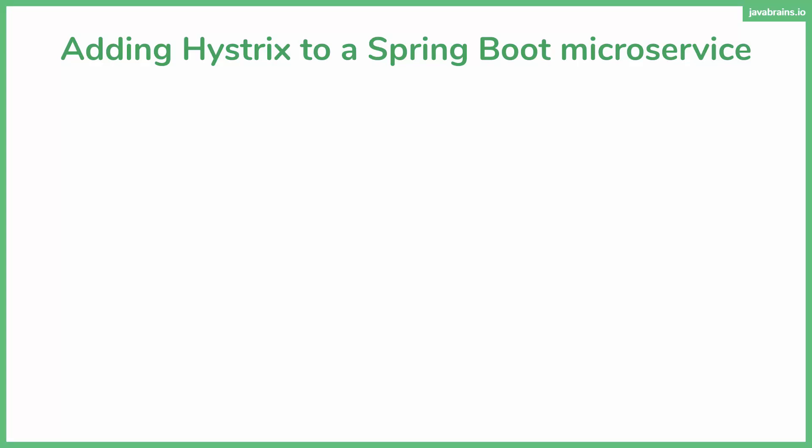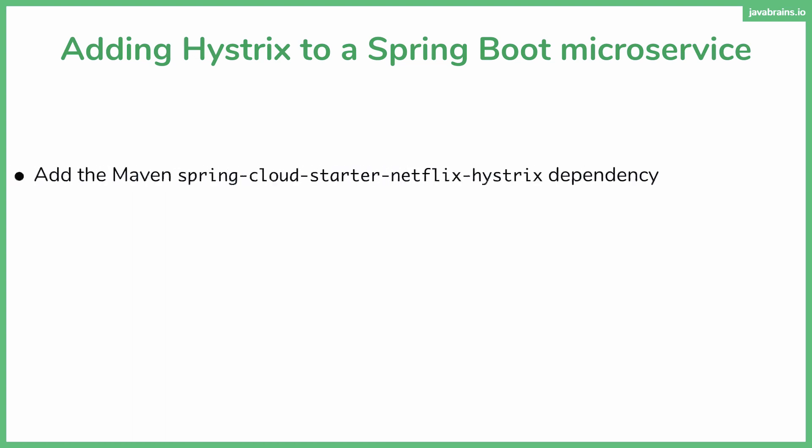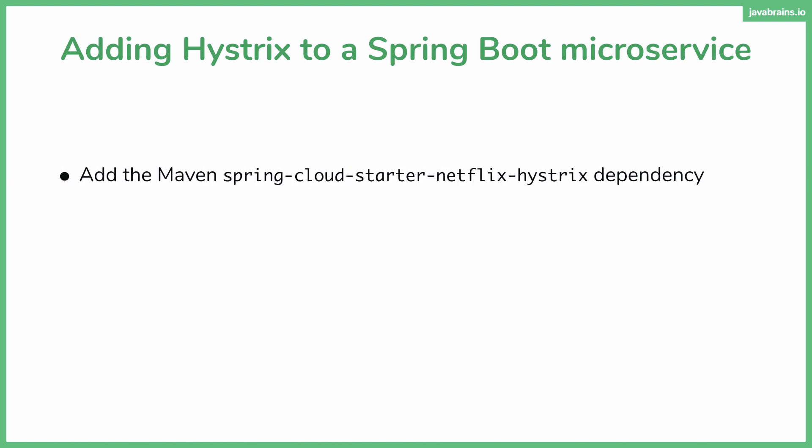What are the steps required to adding Hystrix to a Spring Boot microservice and implementing fault tolerance? First step is to add the Maven dependency. This should come as no surprise because most of these libraries have bundled Spring Cloud dependencies. So in order to get Hystrix, you add the Spring Cloud Starter Netflix Hystrix dependency.